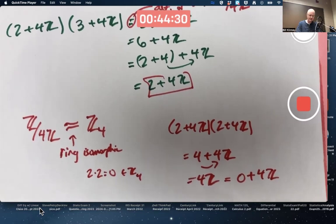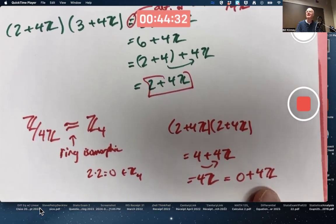0 plus the ideal is the additive identity of the factor ring. The 0 of the factor ring is equal to the ideal.